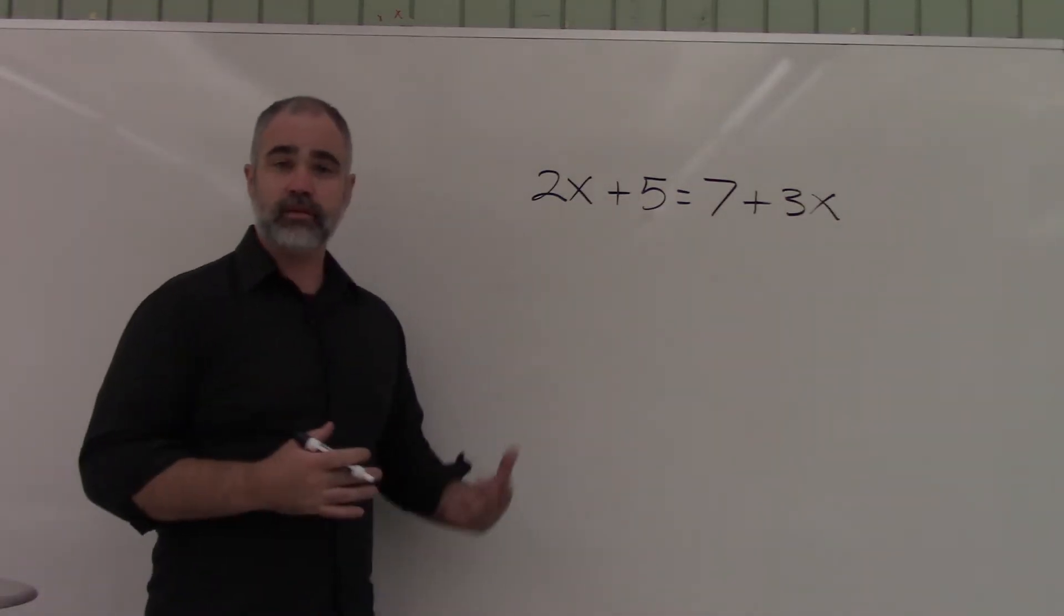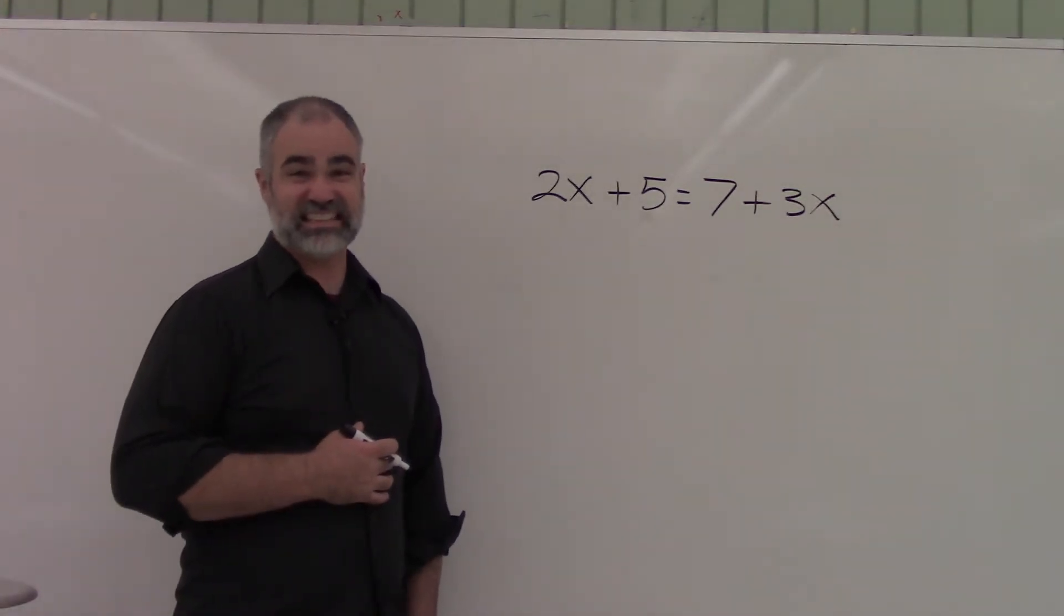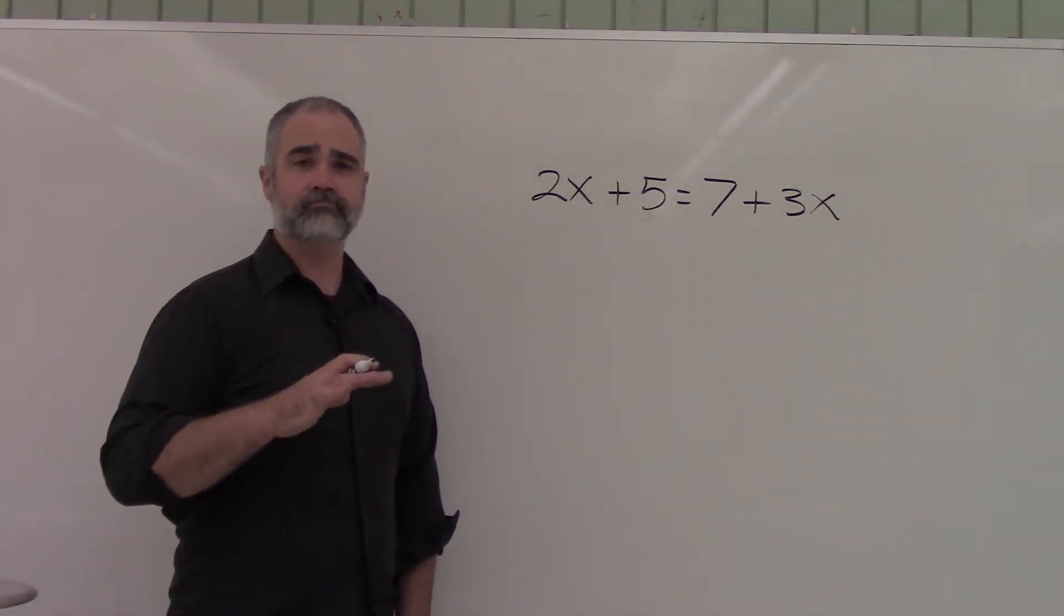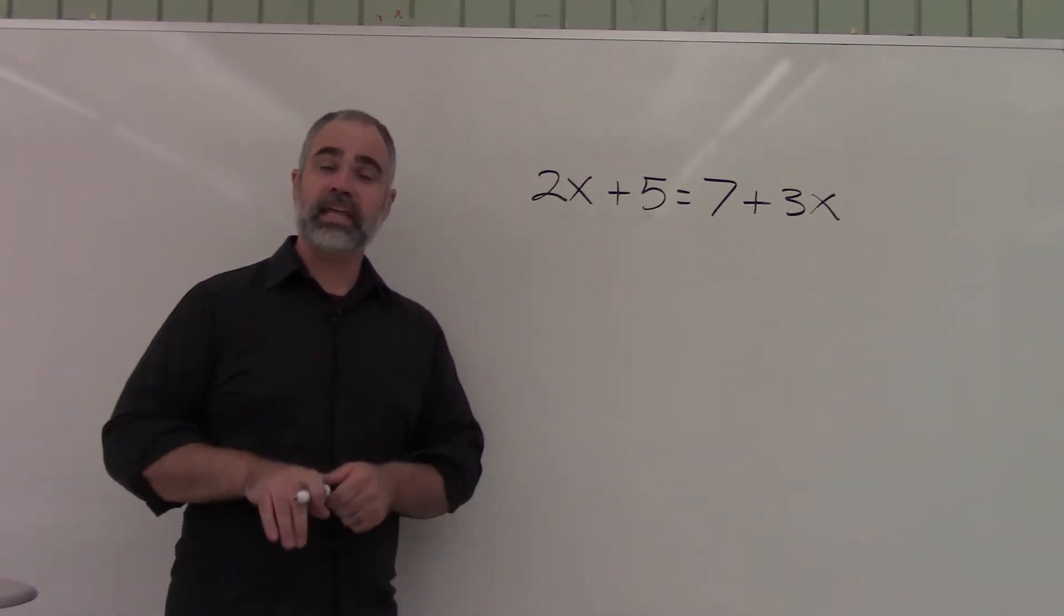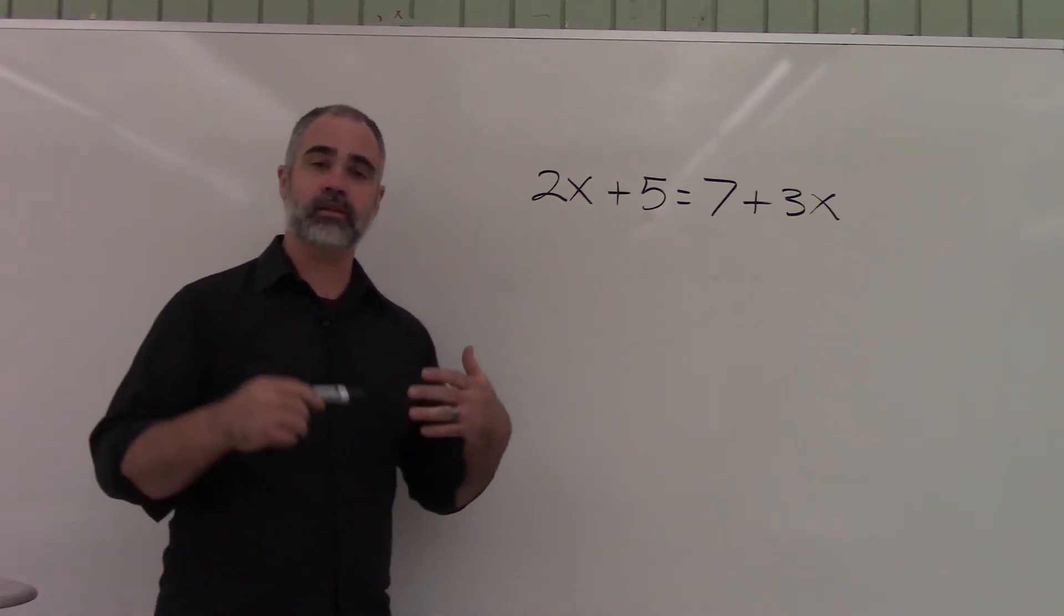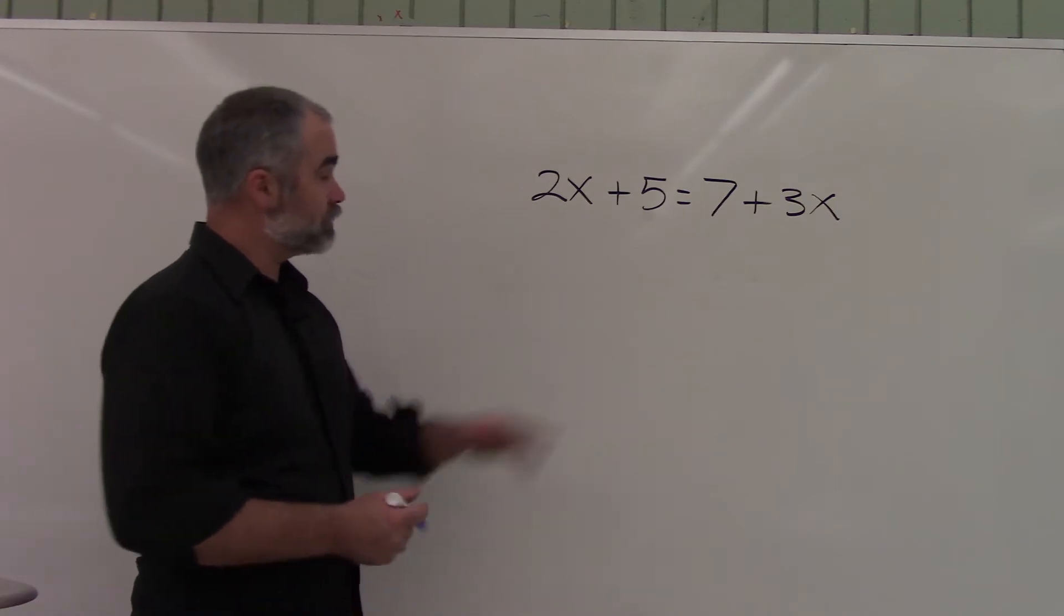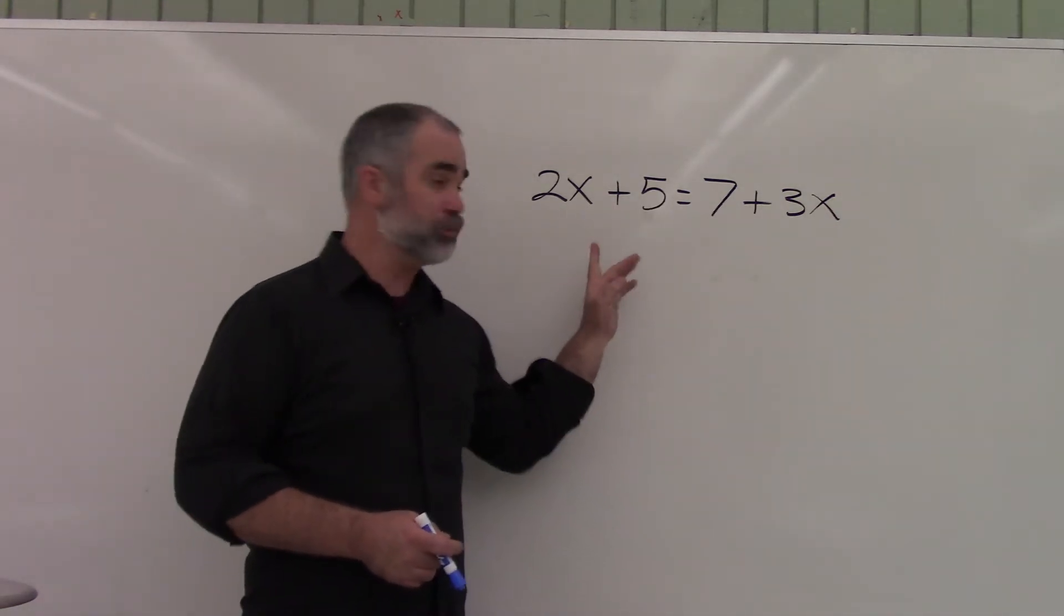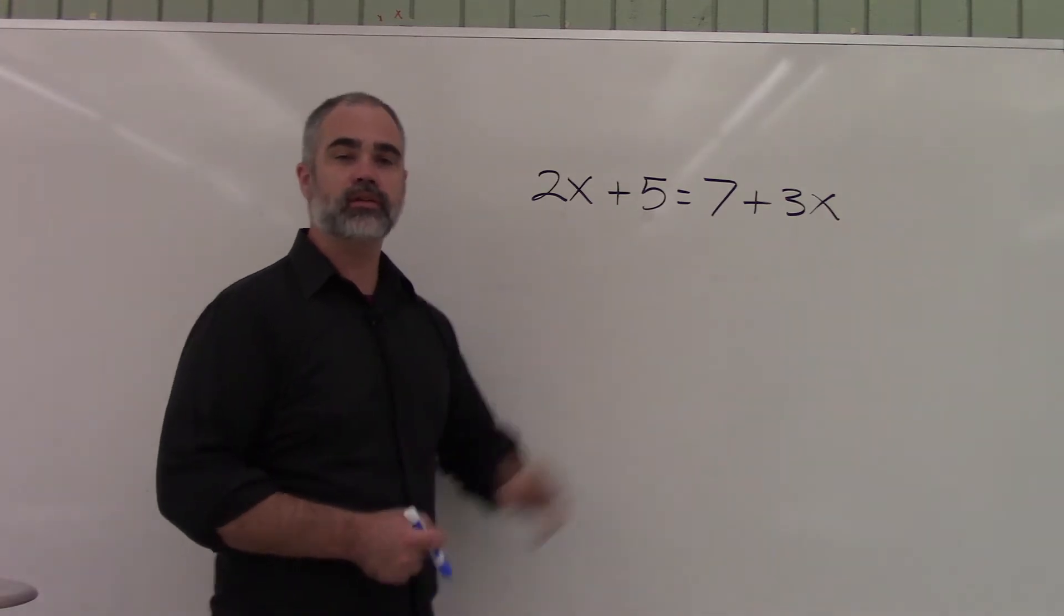What do I do if I have variables on both sides? Okay, that's a challenge. But remember, if it's a variable, it's really just a number. So anything I do with numbers, I can do the same thing with variables. And for example, the 5 and the 7, I would probably subtract 5 from both sides. I can move that around. Look at this though.